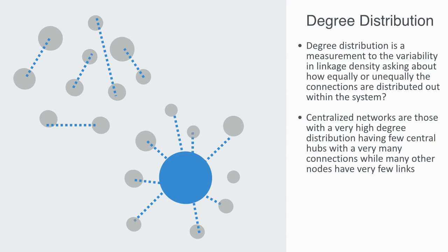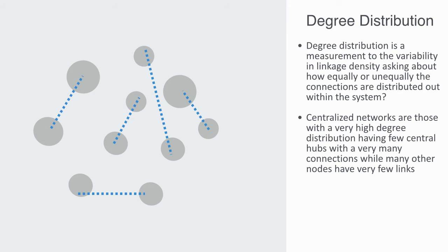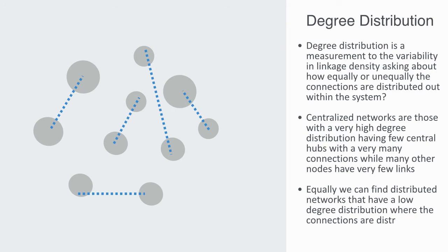For example, the metabolic network of a biological cell follows this centralized scale-free model, where the essential molecules of ADP and ATP — which provide energy to fuel the cell — play a central role by interacting with very many different other molecules, forming hubs in the metabolic network. Equally, we can find distributed networks with a low degree distribution, where connections are spread relatively evenly across the network.